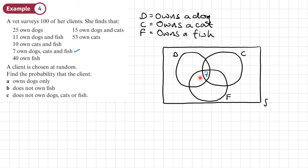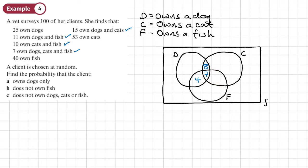Now we move to the pairwise overlaps. Fifteen own dogs and cats — that's the dogs-cats overlap. We already have 7 there, so we don't put 15; we put 8 so those two together make 15. Then, 11 own dogs and fish — that's the dogs-fish overlap. We don't write 11 here because we already have 7; so this part is 4, making 11 total. Then, 10 own cats and fish — that's the cats-fish overlap. There's already 7 there, so all of that needs to add up to 10, meaning this part is 3. That's why we always fill in the middle first.